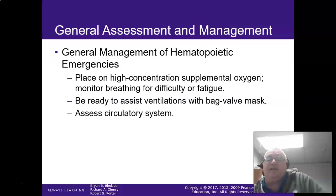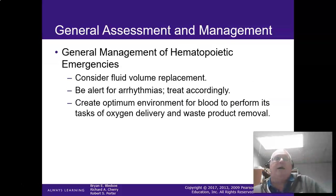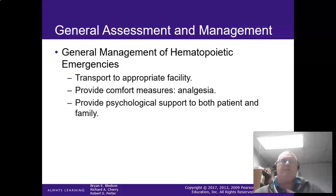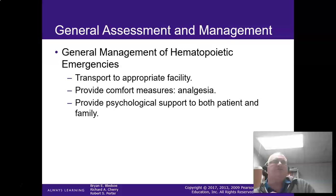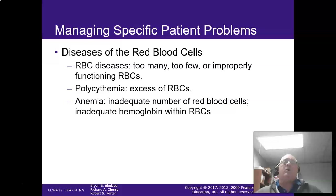So what do we do for these folks? BVM as needed, assess the circulatory system. Fluid volume replacement is usually not a bad thing here, unless they've got a clotting factor problem — usually give them a little bit of saline and they start to feel better. For sickle cell, you can do analgesia: a little bit of fentanyl goes a long way. Then provide psychological support for both the patient and the family, especially if they don't know what's going on.